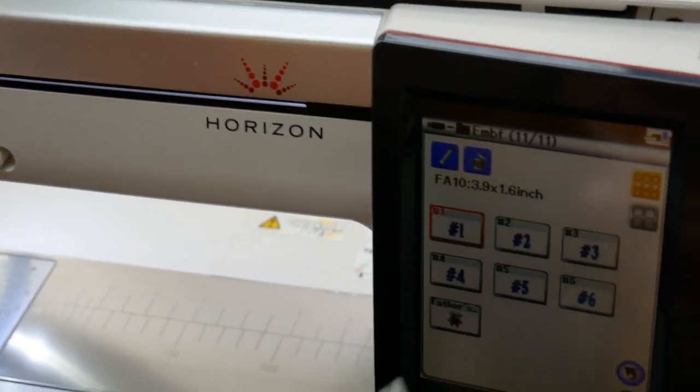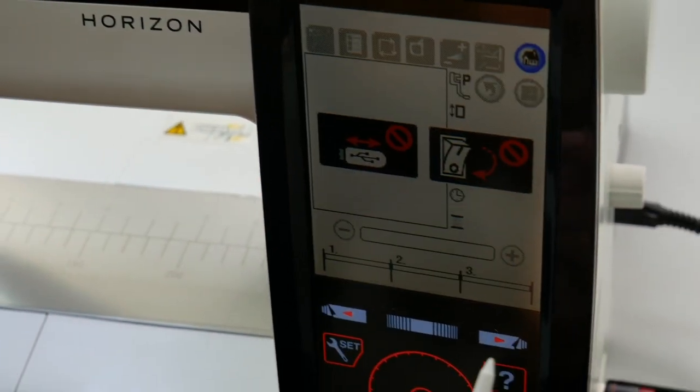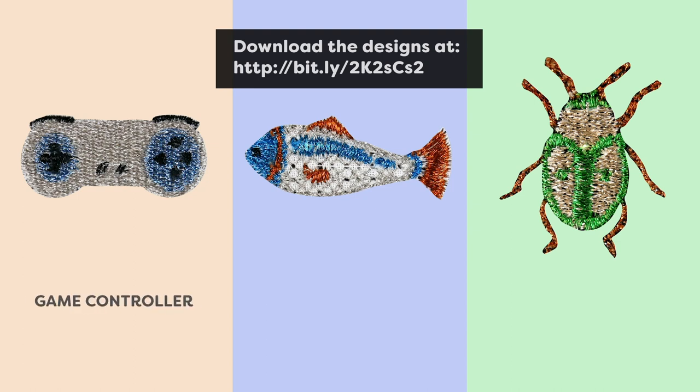Hello everyone, today we're going to show you how to create a personalized tie for your father or husband. To do today's technique, you'll need an embroidery machine. We have included three free digitized designs: a game controller, a fish, and a bug.